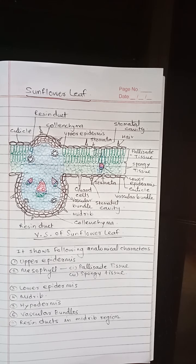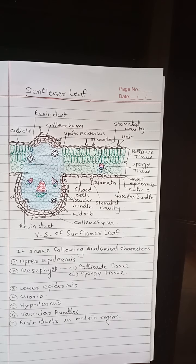Palisade Tissue is two layers in thickness of thin-walled living cells, elongated at right angles to the epidermis. The palisade cells contain a large amount of chloroplasts, that is why they perform the function of photosynthesis.